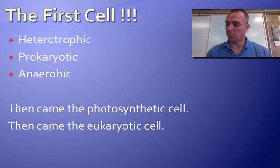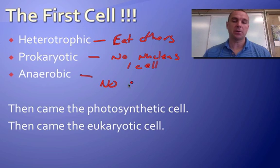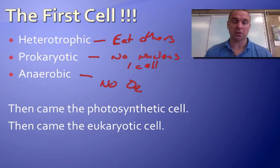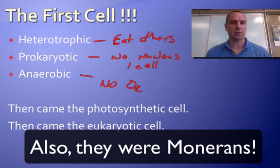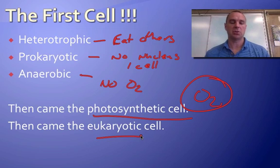The first cells were heterotrophic — meaning they eat other organisms — prokaryotic, meaning they had no nucleus, were probably single-celled, and anaerobic, meaning they needed no oxygen, which makes sense because there wasn't much oxygen on earth at that time. Then along came photosynthetic cells, which put oxygen into the atmosphere, allowing aerobic organisms to exist. Finally, eukaryotic cells appeared — which is important because we are eukaryotic. So there's a clear step-by-step progression. That's video 17, hope you enjoyed it and have a good day!